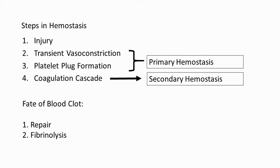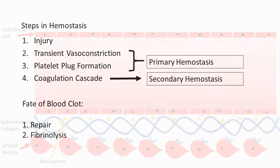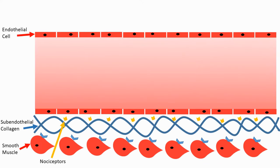Why is it that your normal blood flow does not coagulate, but it only coagulates when there is damage to the blood vessel? We'll cover first what substances or proteins are responsible for this mechanism. This is our diagram that I'll be working on in this video.